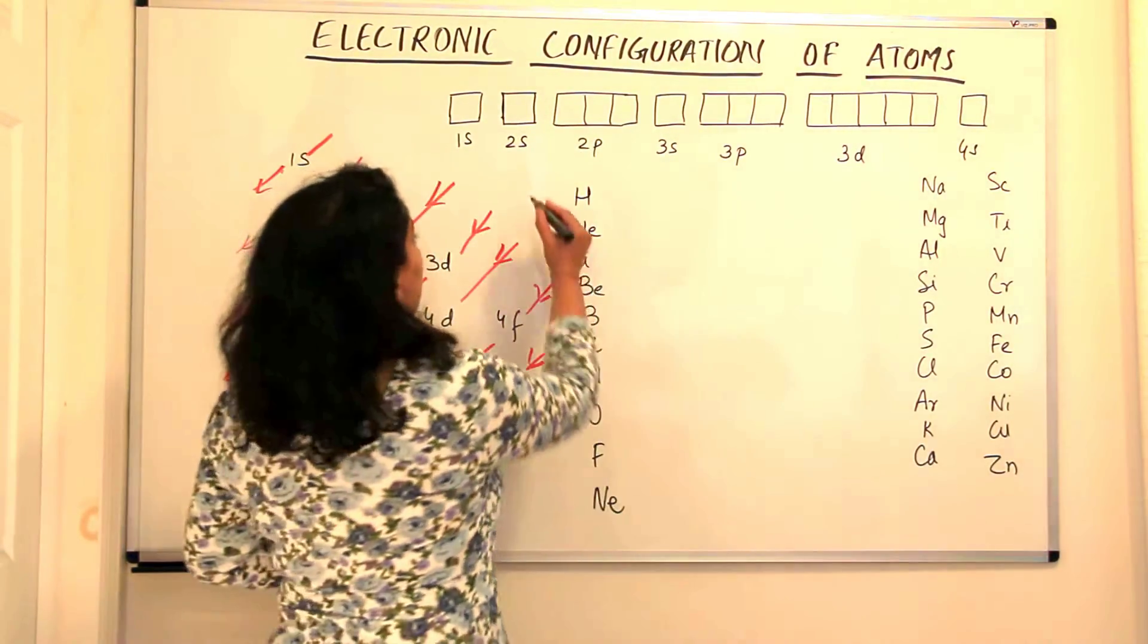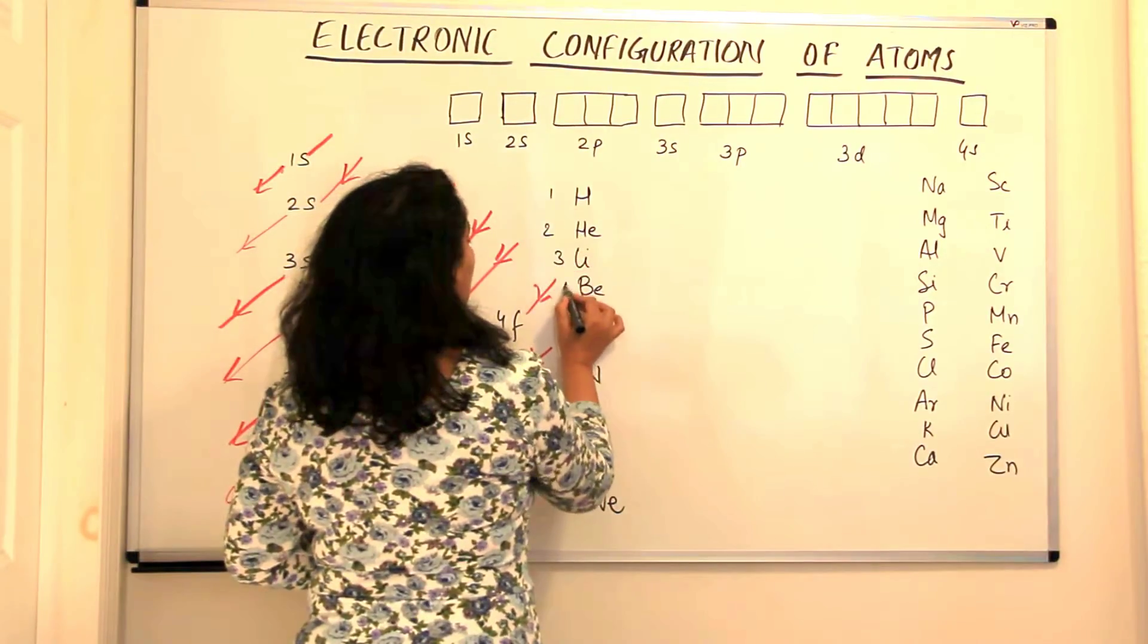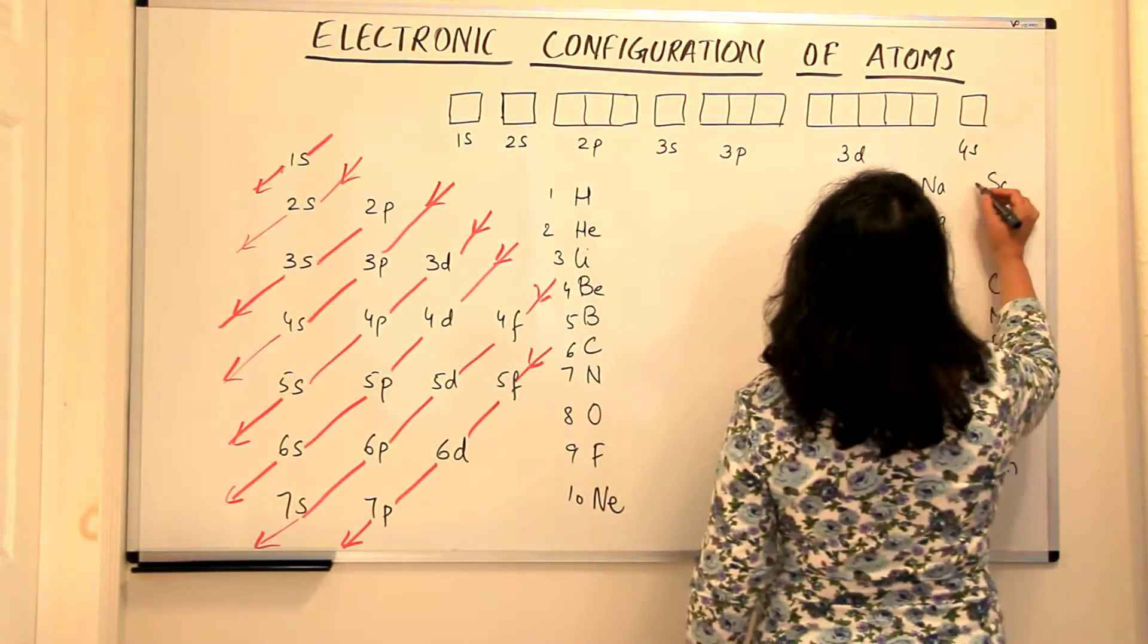Therefore, hydrogen is the first element with 1 electron, 2, 3, 4, 5, 6, 7, 8, 9, 10. This would be 11, 12, 13, 14, 15, 16, 17, 18, 19, and 20. Scandium is 21, 22, 23, 24, 25, 26, 27, 28, 29, and 30. So these are the number of electrons in each of these elements.